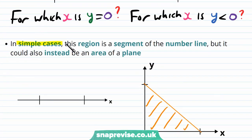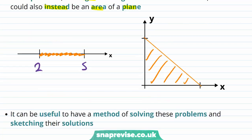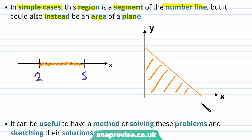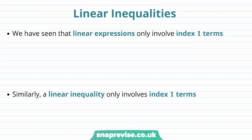In simple cases, this region is a segment of the number line, but it could instead be an area of a plane. We could have a number line with 2 and 5 here and here respectively, and the solution could be all the points in between. But if we have our xy plane, with 3 here and 4 here, the solution to a given problem could be this whole area of the plane. It can be useful to have a method of solving these problems and sketching their solutions.